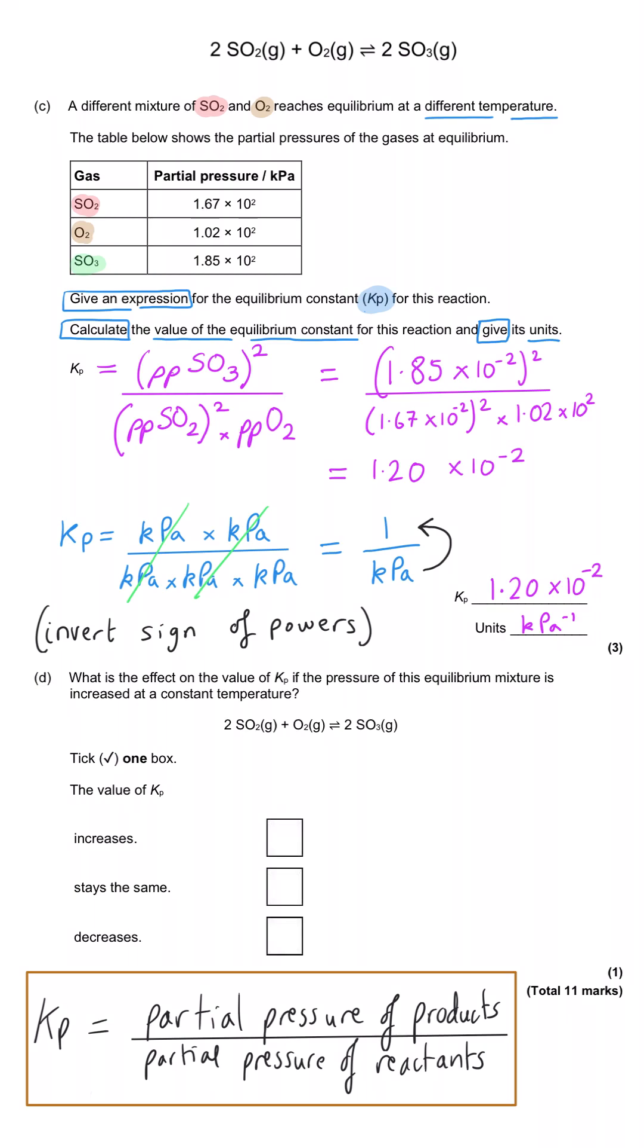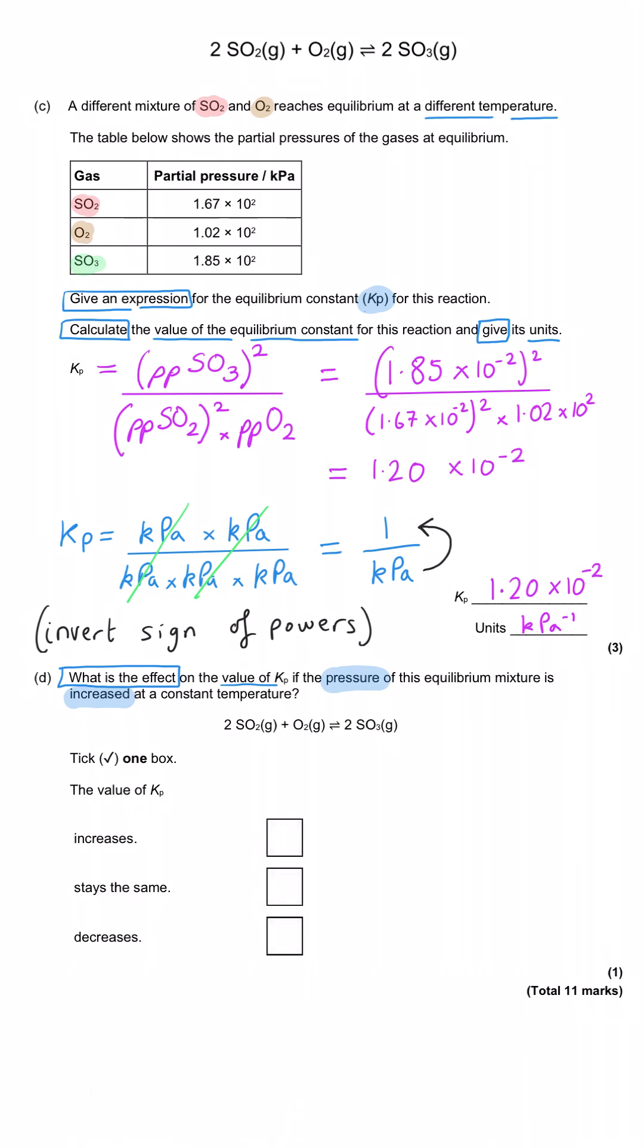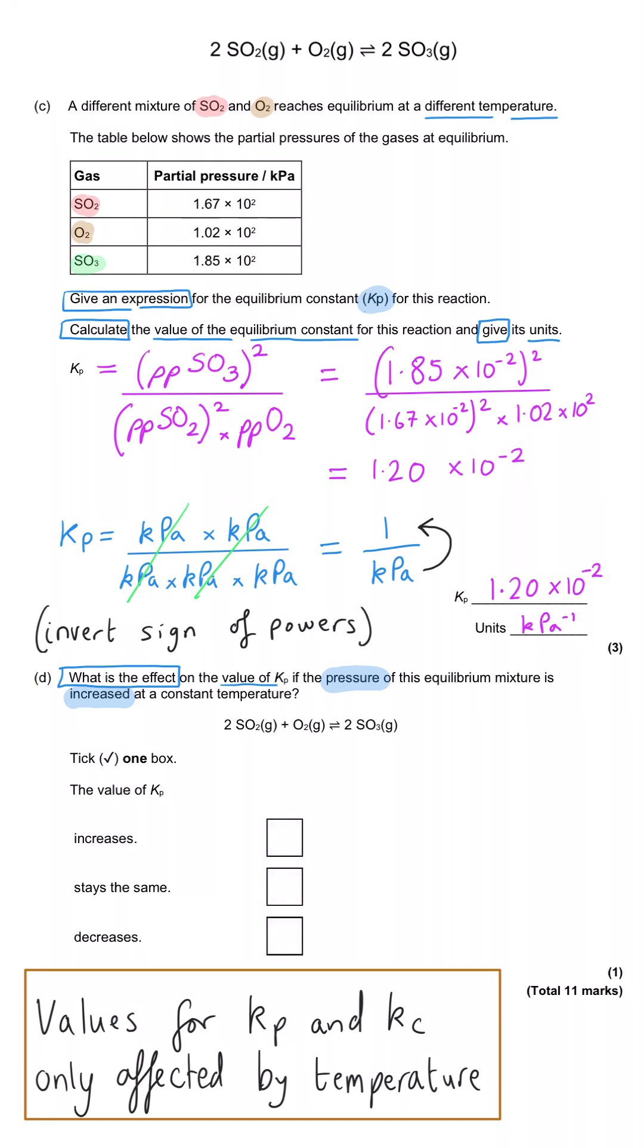And then in part D, the final bit of this question, we are asked, what is the effect on the value of Kp if the pressure of this equilibrium mixture is increased at constant temperature? And so actually this is a really fast question, because the only thing that affects the actual value of Kp is temperature.